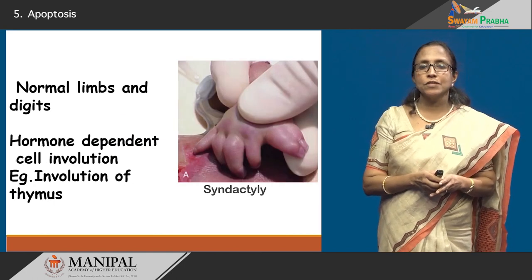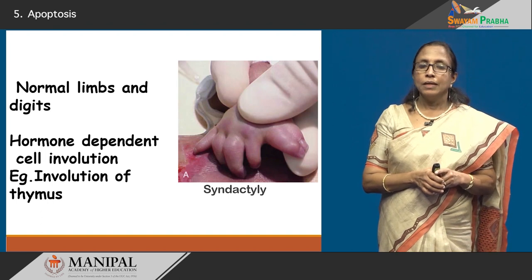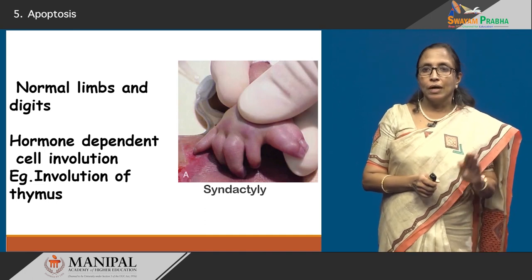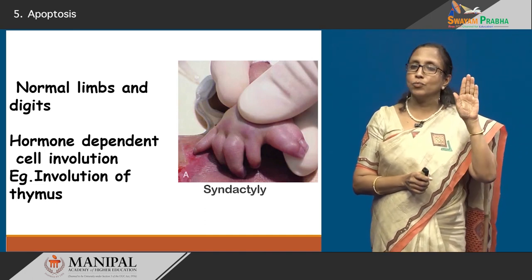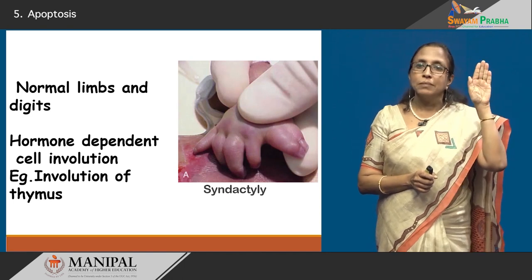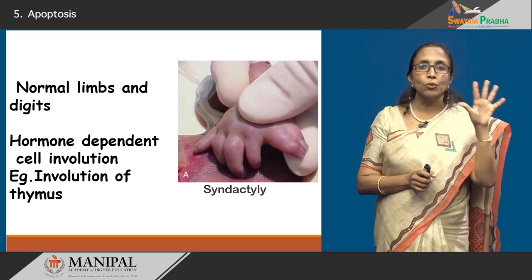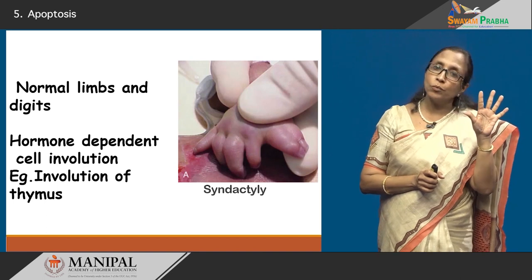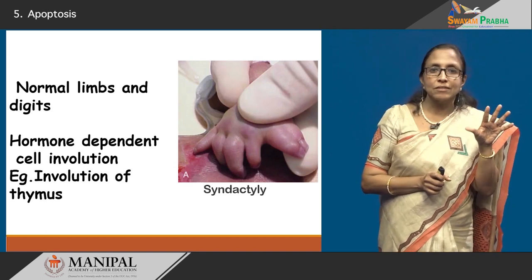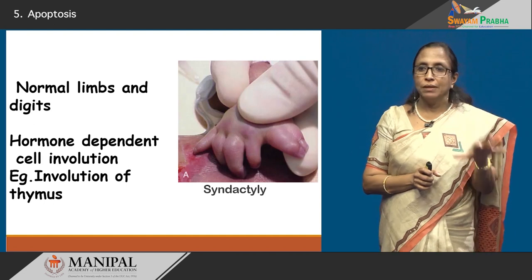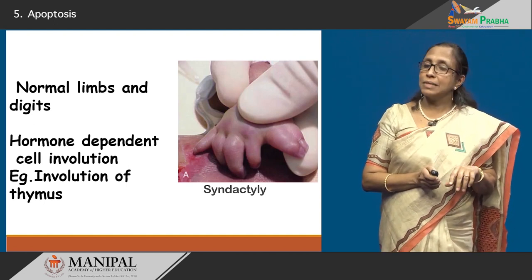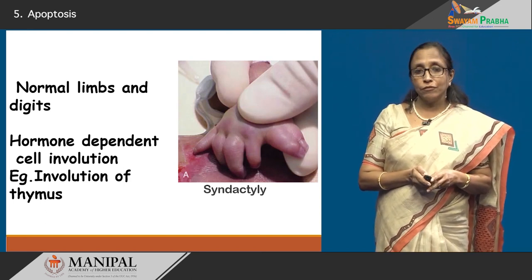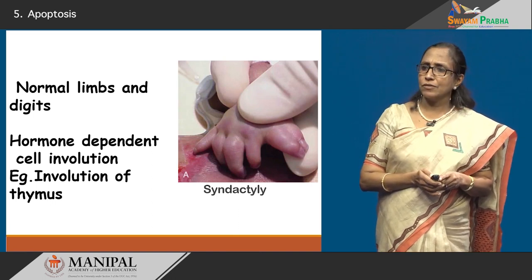Just for us, if you look at the normal limbs — the limbs and digits are normal because of hepatosis. If not, we would have just hands without any digits. The digits in the hand are because of the process of hepatosis. If this process was not normal, we would have been like ducks with webbed feet and webbed limbs. And when an abnormality happens, that is when we get syndactyly. Hormone dependent cell inductions also occur in the thymus and in various organs.